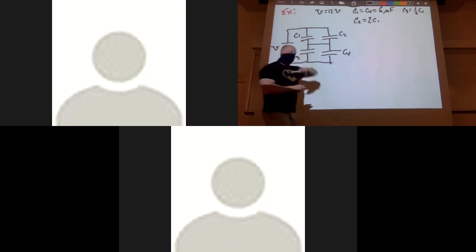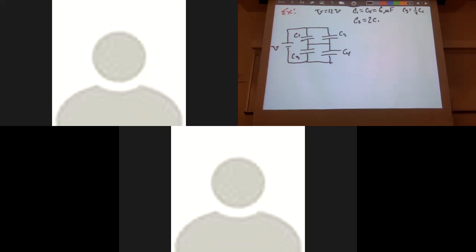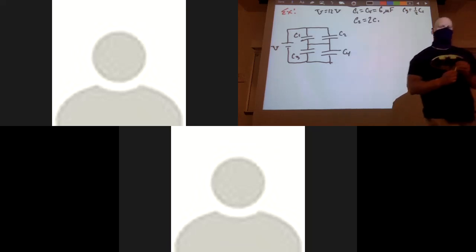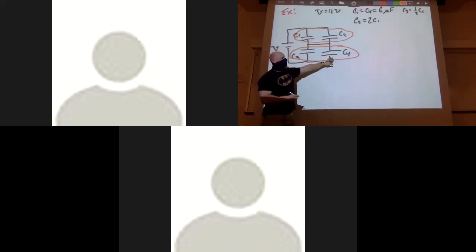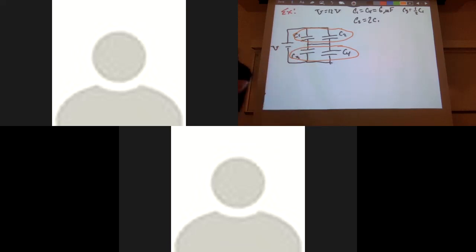The first thing I need to identify is what is in parallel and what is in series. By looking at the circuit, C1 and C2 are in parallel, and C3 and C4 are also in parallel. So I can combine these down to create two equivalent capacitors: C12 and C34.